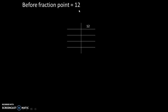Before the fraction point, we will divide 12 by 2 consecutively till we get an answer equal to 0. Why are we dividing by 2? Because the base of the binary number system is 2. So, 12 divided by 2, we will get an answer equal to 6 with remainder 0.